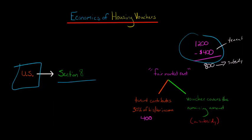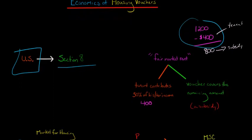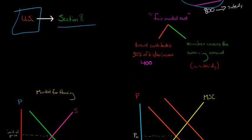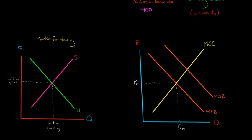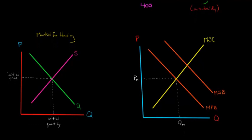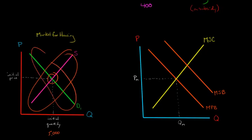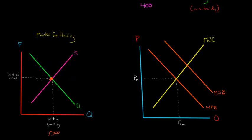Now I want to show you the effect that this would have on supply and demand in terms of the market for housing. Let's say that our initial quantity of housing in an area is 5,000 units at equilibrium — we've got supply and demand. So our equilibrium quantity of housing is 5,000, and our initial price is $700 a month.